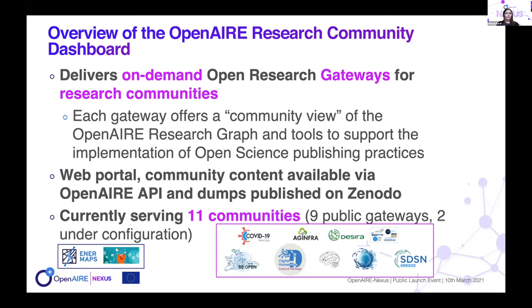Currently we are serving 11 communities, and nine already have public gateways, while in two cases we are still working on that. For example, we have gateways for coronavirus disease, agriculture and food science, digital humanities and cultural heritage, and transport research, while we are working with communities for energy, sustainable energy research, and science and innovation policies.